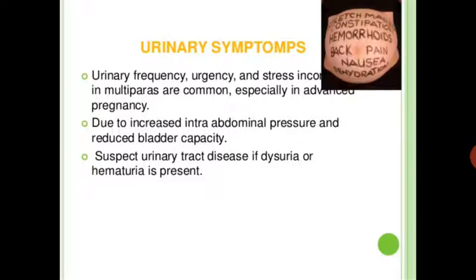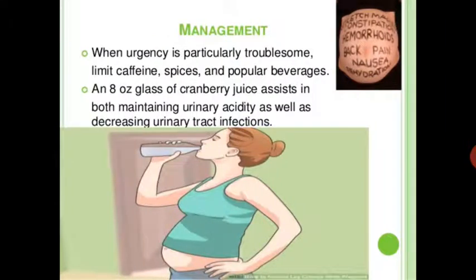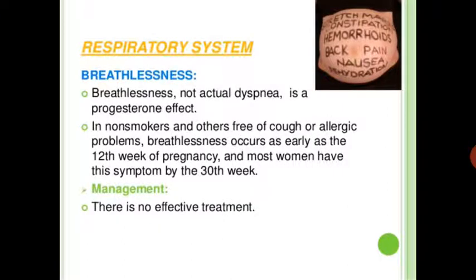Next is urinary symptoms: urinary frequency, urgency, and stress incontinence are common in advanced pregnancy due to increased intra-abdominal pressure and reduced bladder capacity. Suspect urinary tract disease if dysuria or hematuria is present. Management: when urgency is particularly troublesome, limit caffeine, spices, and carbonated beverages. Eight glasses of cranberry juice assist in maintaining urinary acidity as well as decreasing urinary tract infections.